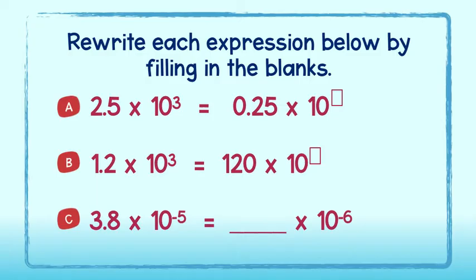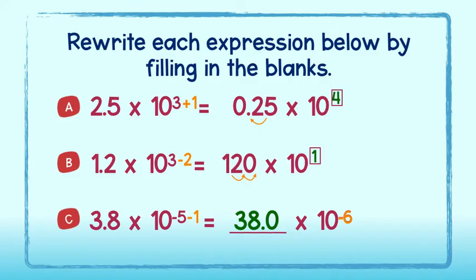Rewrite each expression below by filling in the blanks. For part A, we see the decimal was moved one place to the left, or it got smaller by 1 power of 10. Therefore, to keep the value the same, we must add 1 power of 10 to get 10 to the fourth power. For part B, the decimal moved two places to the right, making the number larger by 2 powers of 10. Therefore, we must subtract 2 powers of 10 to get 10 to the first. Lastly, we see that the power of 10 for part C gets smaller by 1 power, resulting in 10 to the sixth. Therefore, we must make the first factor larger by 1 power of 10 to get 38.